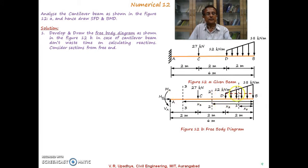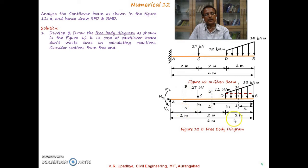In between D and B it is subjected to uniformly varying load, so we need one section there. From B up to D there is no force. Beyond D up to B the force value is changing, and beyond D up to C the total magnitude of the uniformly varying load will be the same. At C there is a point load, so between C and A we need one more section. For all sections — 1-1, 2-2, or 3-3 — B is the origin at the free end, with distances x1, x2, or x3 respectively.